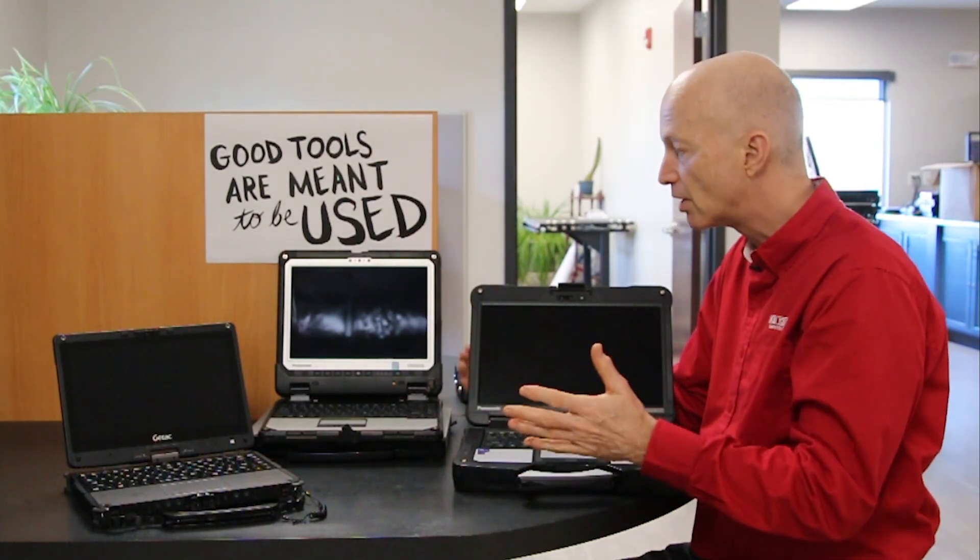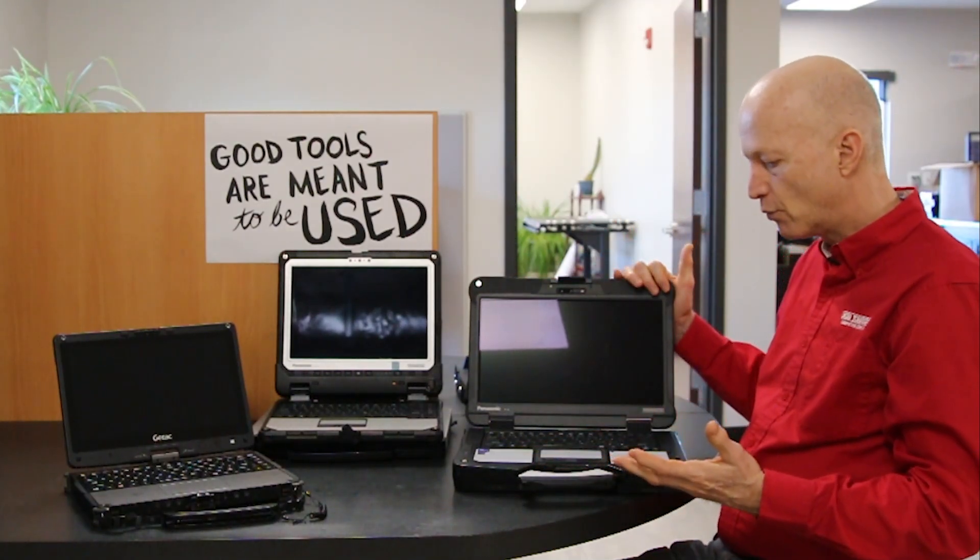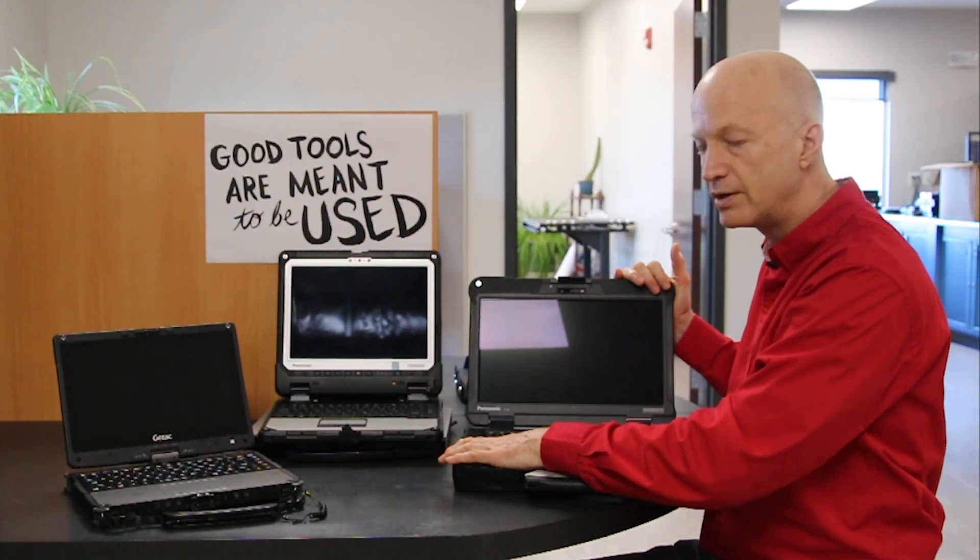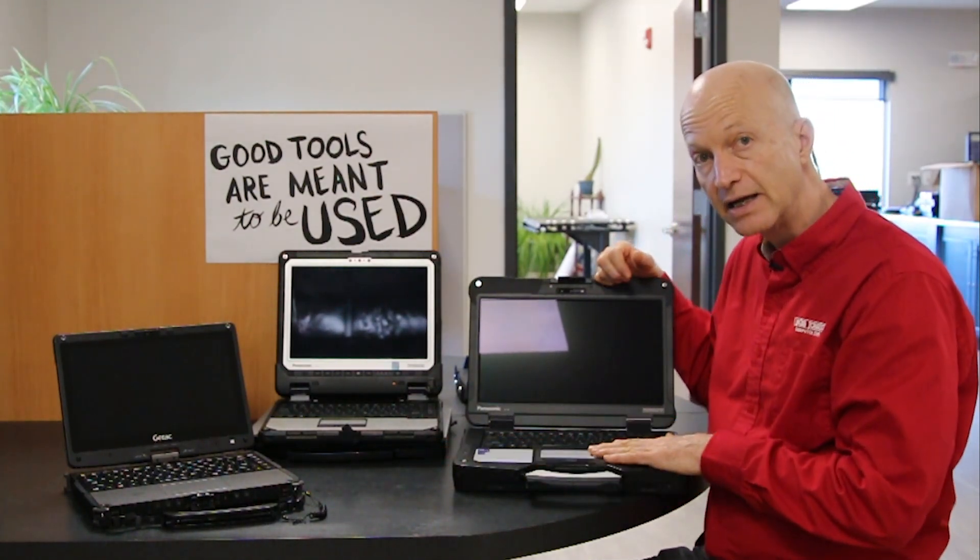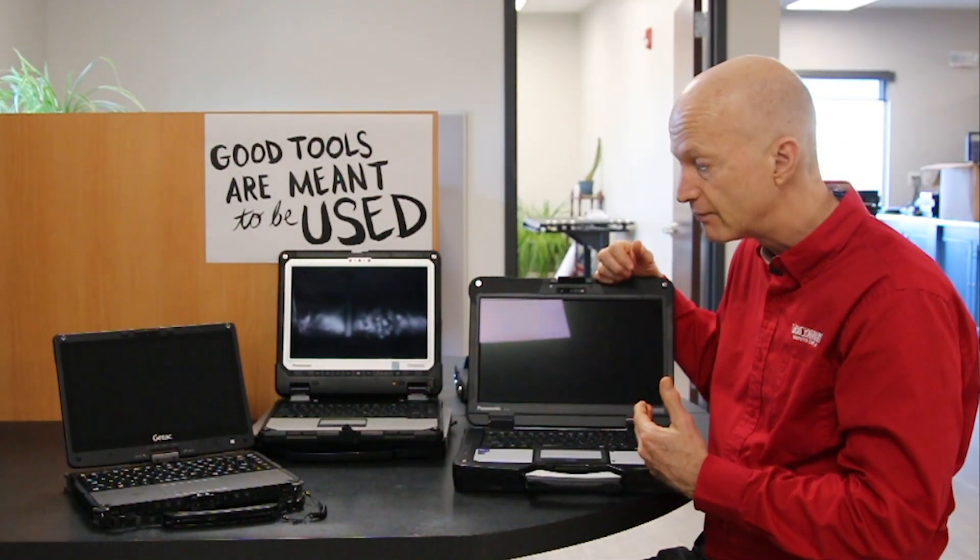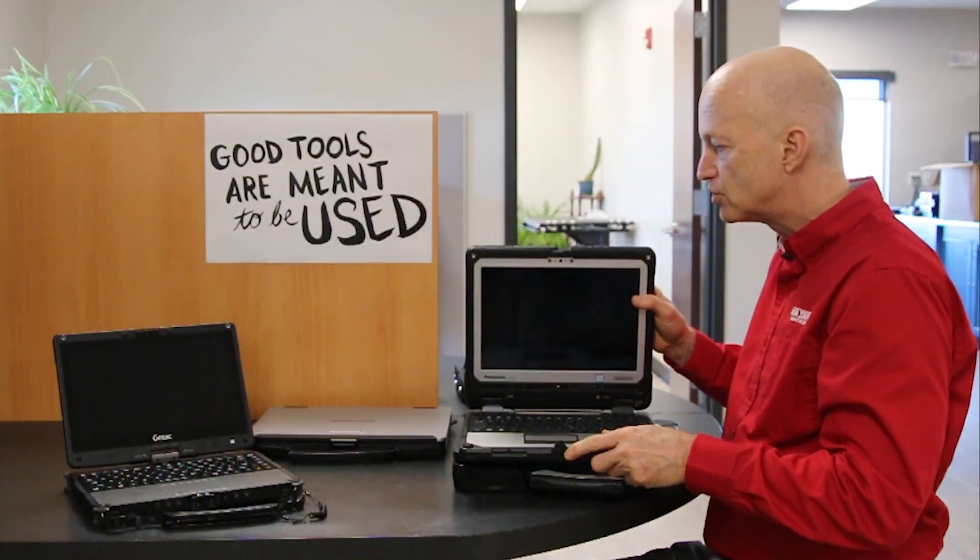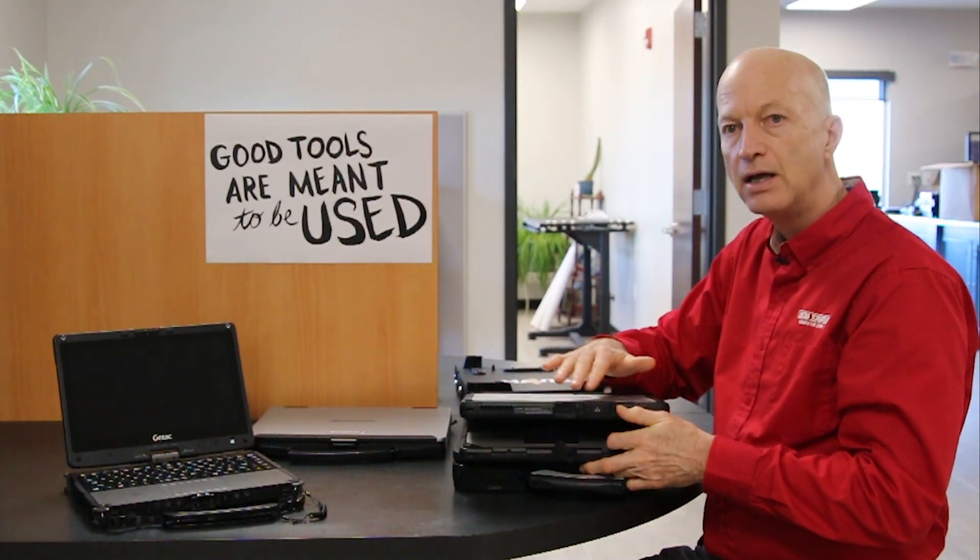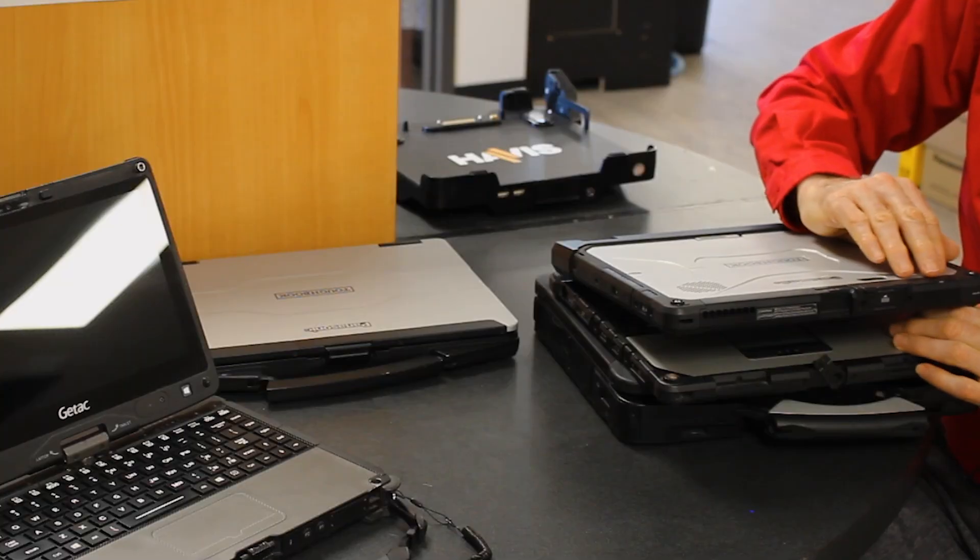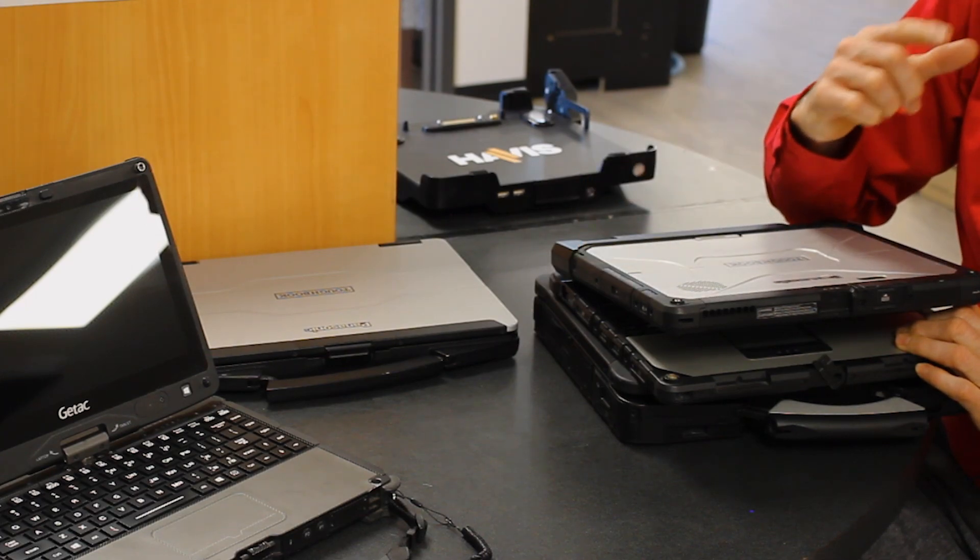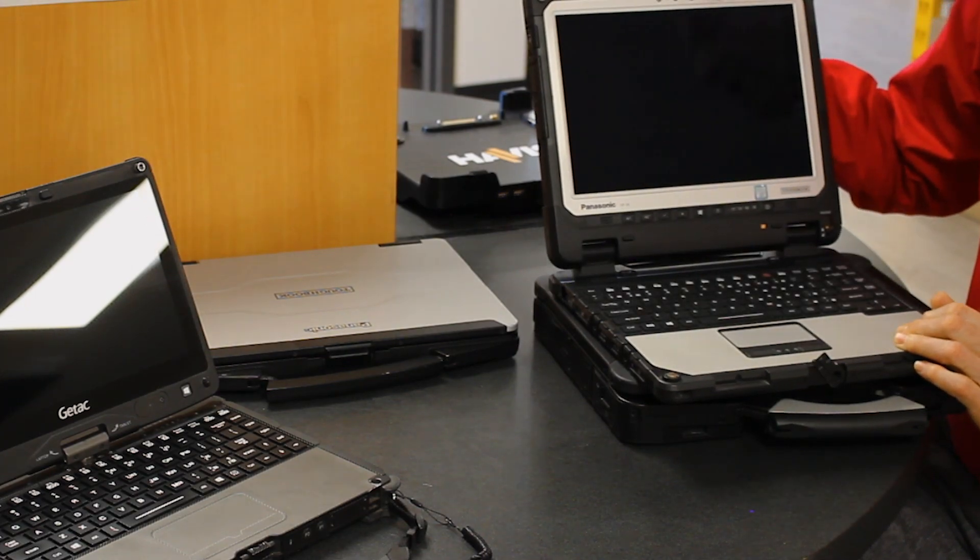For example, in the FZ40 you get the advantage of having one standard battery, but you can add a secondary battery to gain battery life. Same thing with the CF33. The CF33 has two batteries. You can buy the unit with extended batteries that can give you up to 20 hours of battery life. Do you need it? I don't know. You may not need to go to that expense.